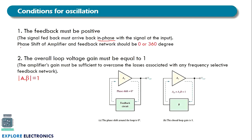In other words, the phase shift of the amplifier and the feedback network combined should be 0° or 360° — that is the first condition. The second condition is that the overall loop voltage gain G must be equal to 1. The amplifier gain A and the feedback factor β must be designed so that A times β equals 1. These two conditions must be satisfied to get sustained oscillation.